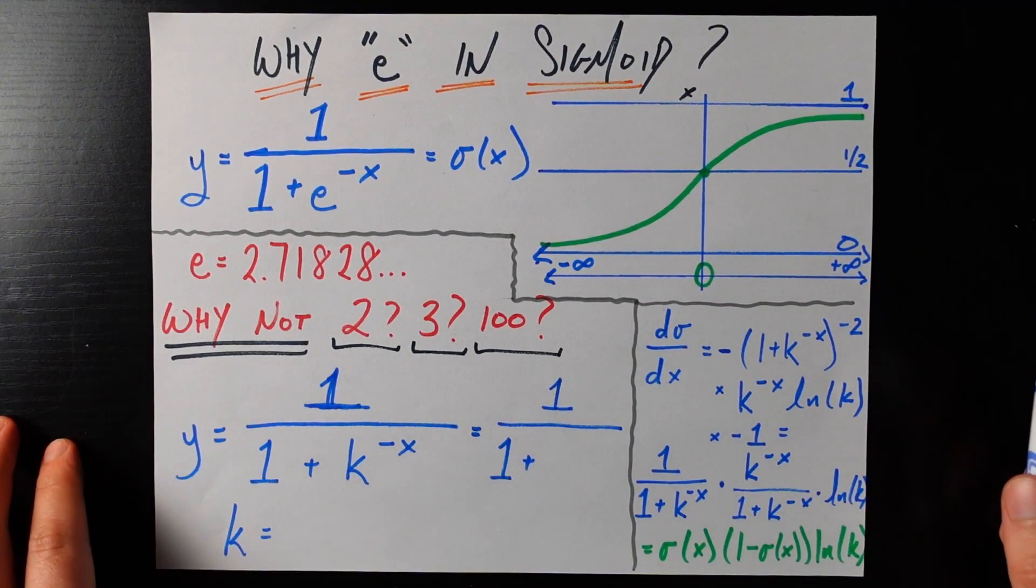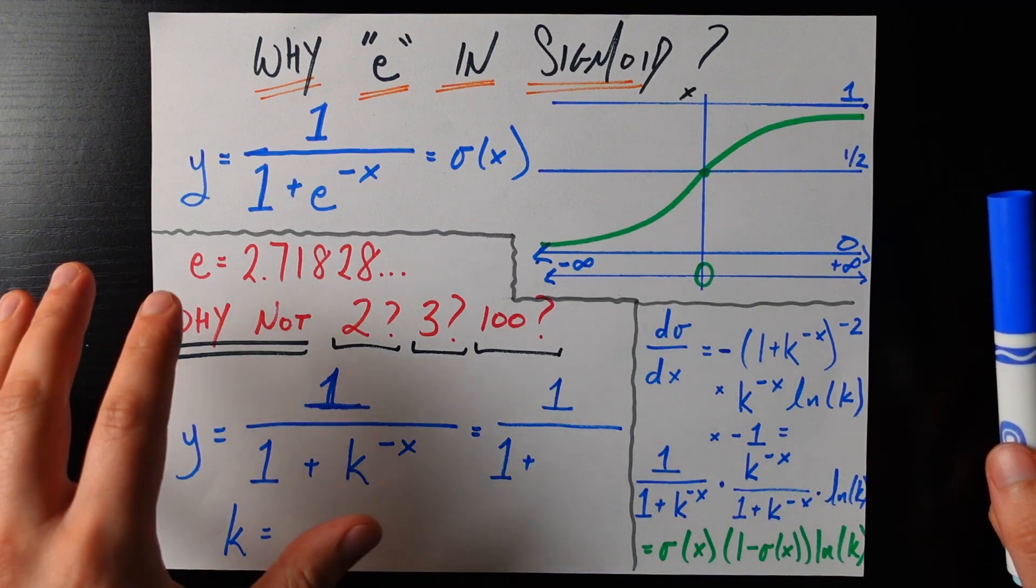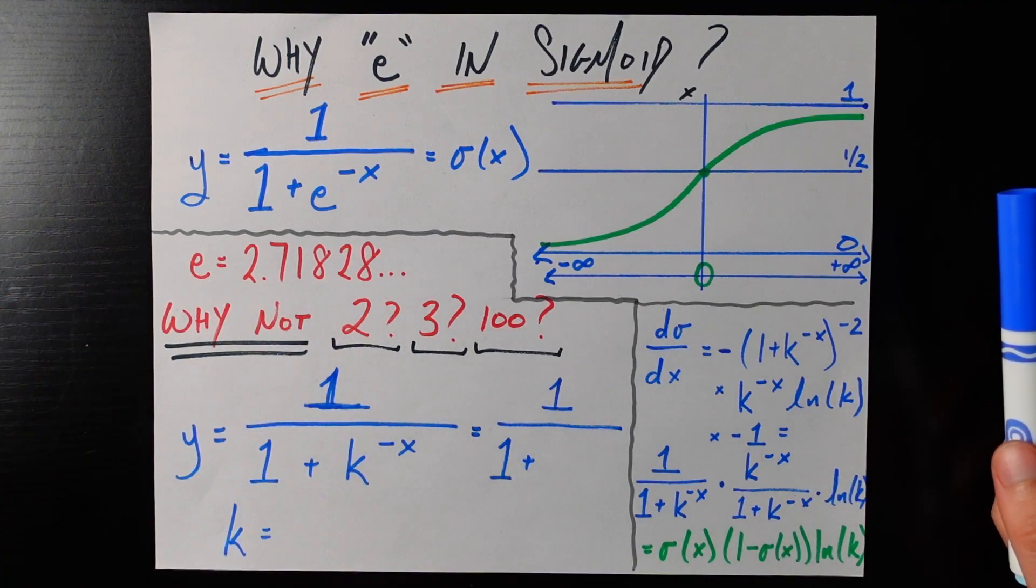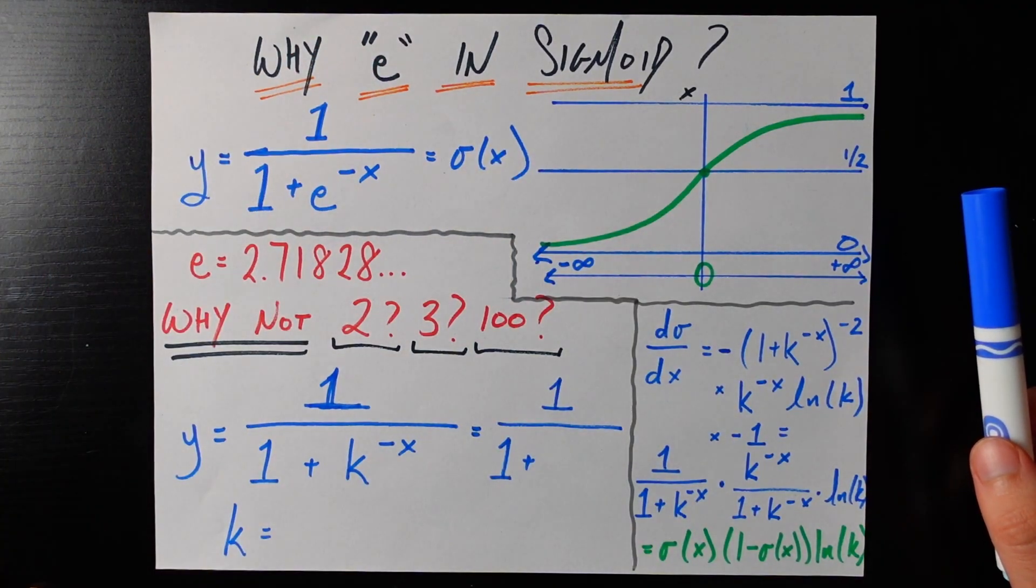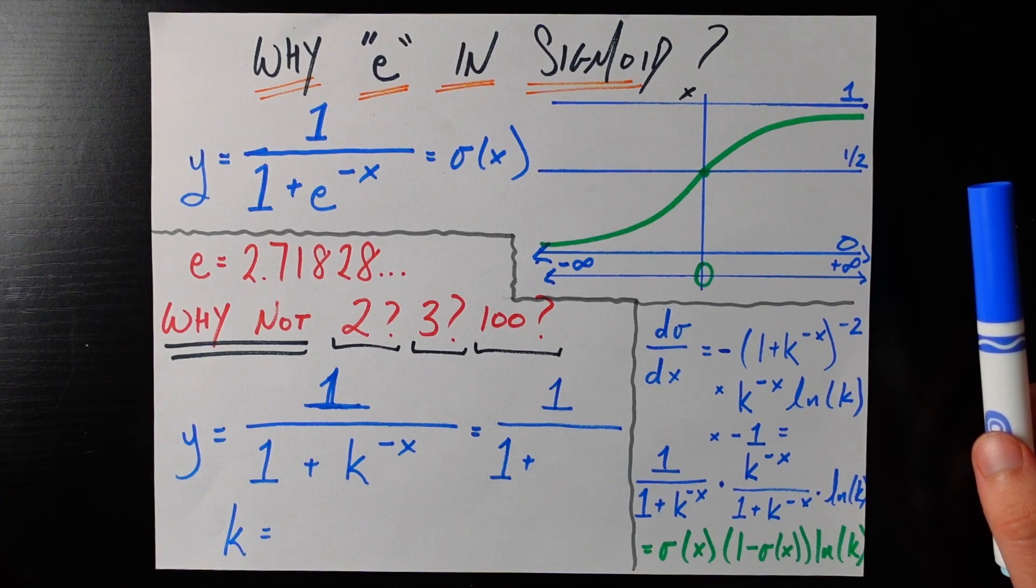What is up everybody? So a quick video for you today. I got a really insightful comment on our sigmoid video recently asking why are we using e, Euler's number, when we come up with the formula for the sigmoid, a very popular function used in data science and machine learning.